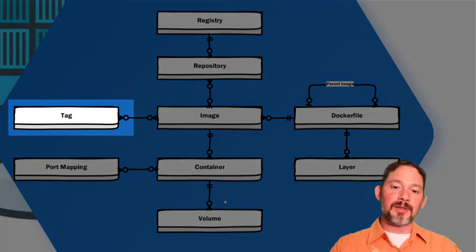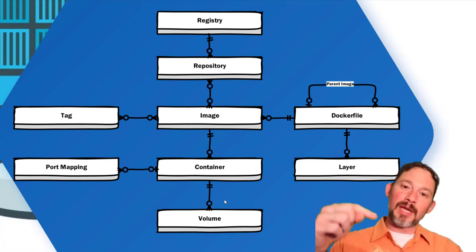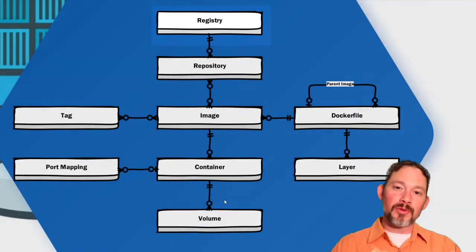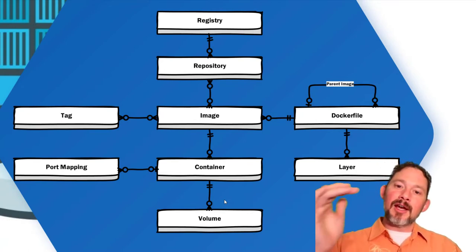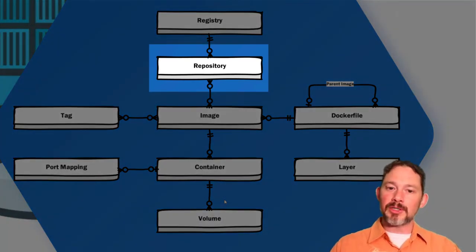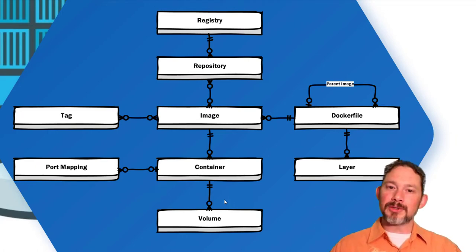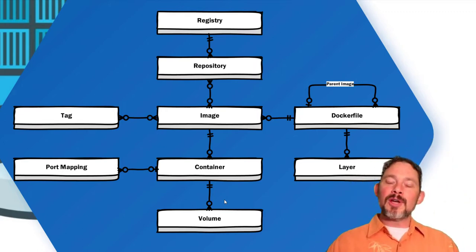Images can have tags, so you might say this is version 2.1, this is version 2.2 — that becomes very important later. You can publish up to a registry. The main registry everybody uses is the public Docker Hub, which is the default. That registry can have multiple repositories — Microsoft is a repository, for example. That repository can have images published to it, which are closer to tags. Tags and images are what live inside repositories.